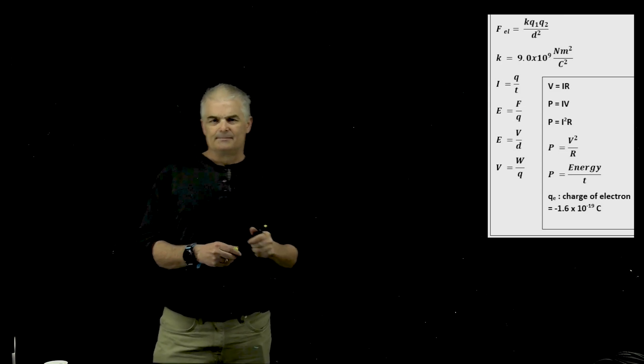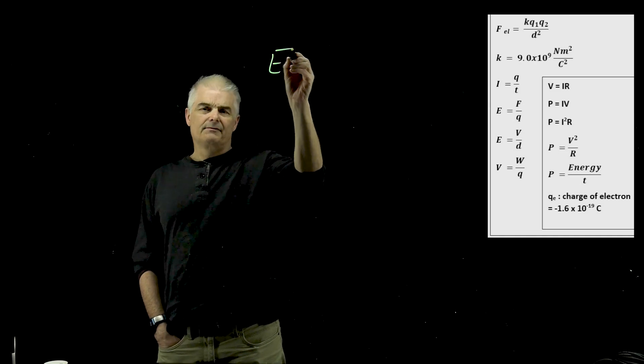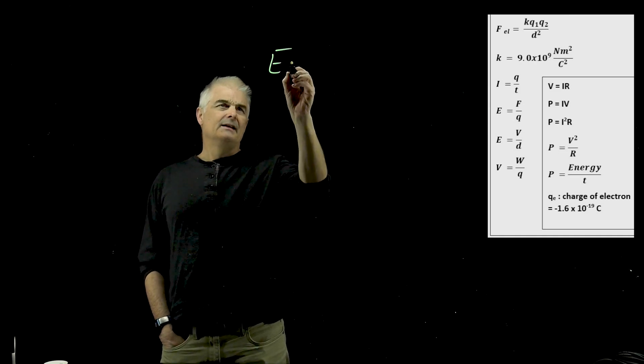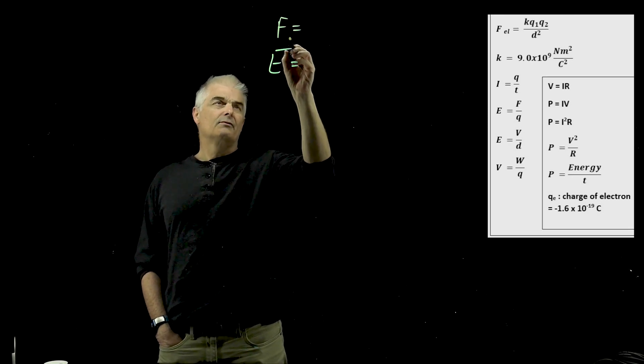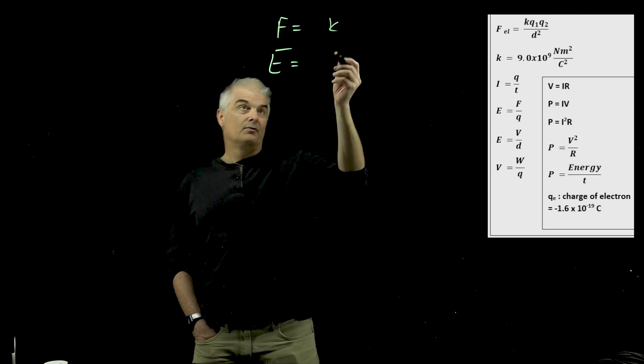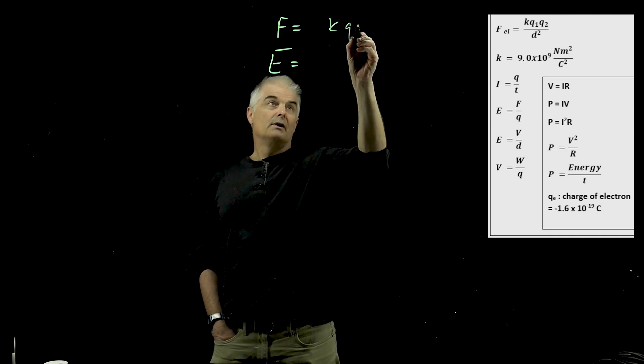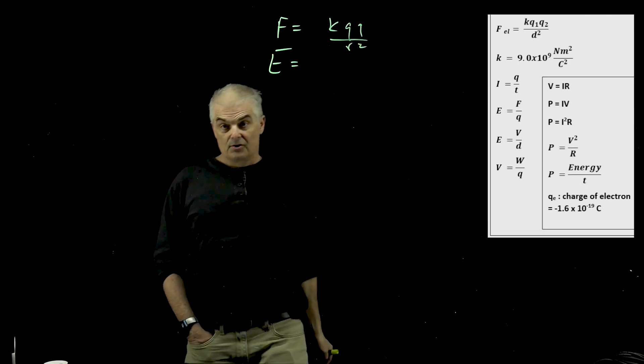So you can have electric field, right? So electric field is E. And E, actually let's start earlier. Let's start with F, electric force. And that's all, it all was based on this one thing. Force is K, Q1, Q2 over R squared.